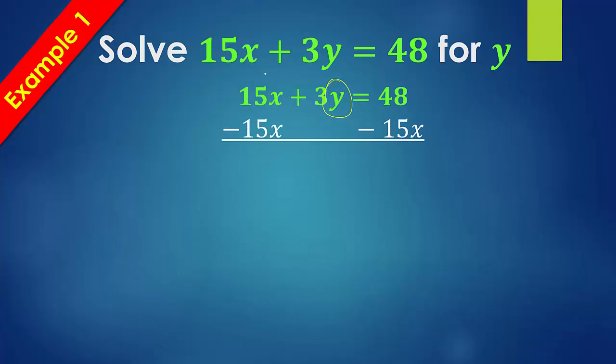Start off by subtracting 15x from both sides. That'll clear this side, giving you 3y equals negative 15x plus 48. So remember, we can't add these together or subtract because this doesn't have a variable, and that's okay. We keep them separate.